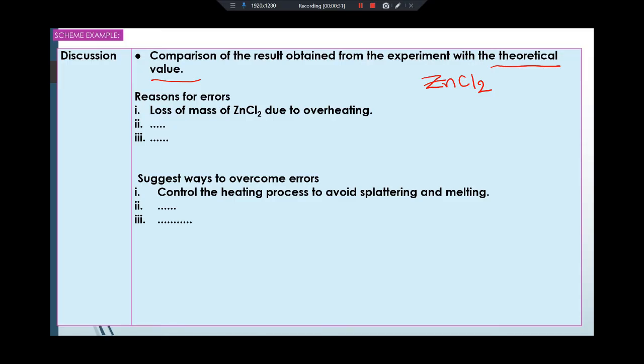Next is give reasons for errors. For example, I give you one: loss of mass of zinc chloride due to overheating. There is a possibility when you run the experiment, you overheat the compound. So give another two reasons for errors.